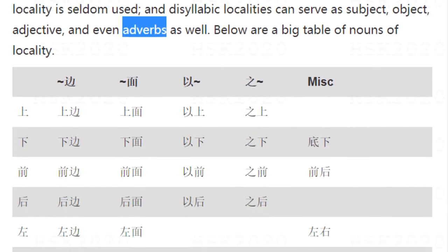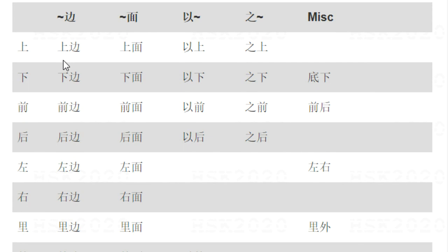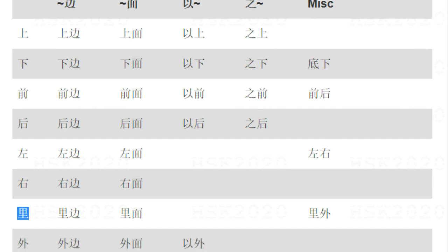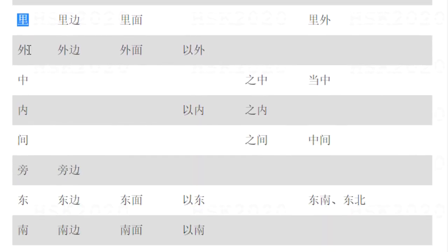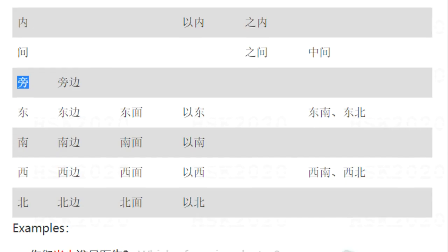I can read that for you. Here we have one-character localities: 上, 下, 前, 后, 左, 右, 里, 外, 中, 内, 间, 旁. Finally, we have four directions: 东, 南, 西, 北.